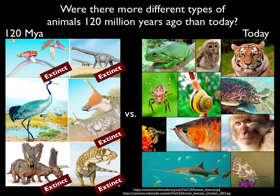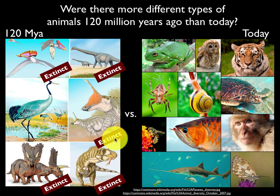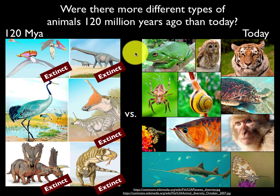I start by telling my students that my son is in second grade and he's been learning about dinosaurs. He's learned that all these different crazy-looking animals have gone extinct, and he came home one afternoon and asked: were there more different types of animals 120 million years ago than there are today? Well, how do we figure out an answer to that question? My students can usually come up with something about fossils — they know that those are important. So let's look at how fossils help us answer this question.